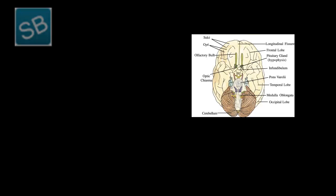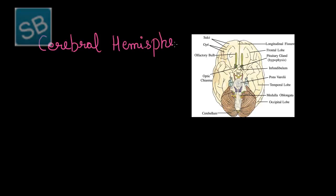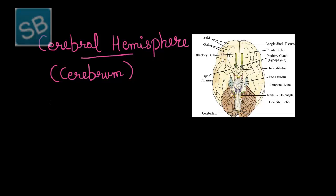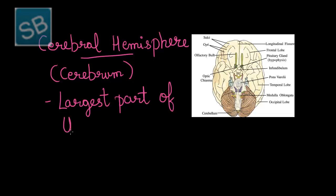That is all about the olfactory lobes. Now let us begin with the second region of the forebrain, that is, the cerebral hemisphere, also known as cerebrum. The cerebral hemisphere covers the olfactory lobe. This larger portion forms the cerebrum, which is considered the largest part of the forebrain and therefore of the brain.